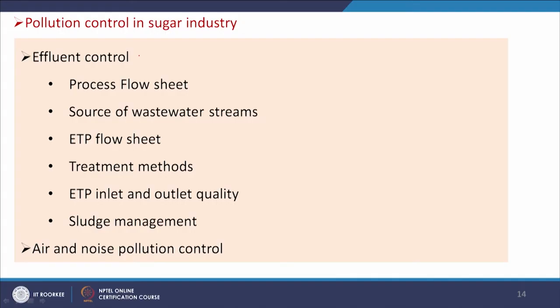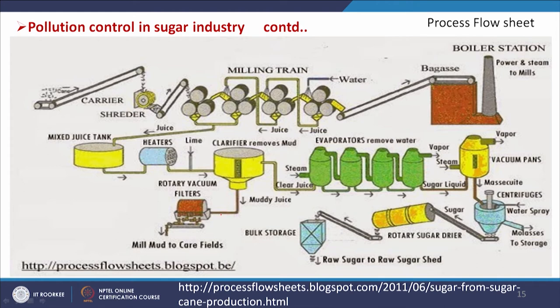Now we will focus on pollution control in the sugar industry. We will look at the effluent control, air and noise pollution control. Starting with the process flow sheet: sugarcane is brought in and passed through mills. The milling train produces juice and bagasse. The bagasse is used in the cogeneration plant for electricity production.